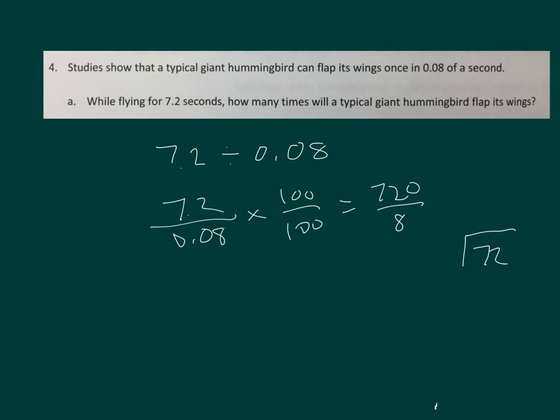Do our long division. We'll end up getting 90 as our answer. Giant hummingbird will flap its wings 90 times.